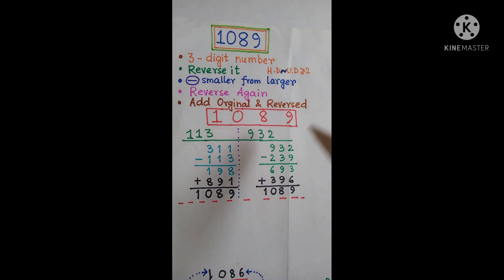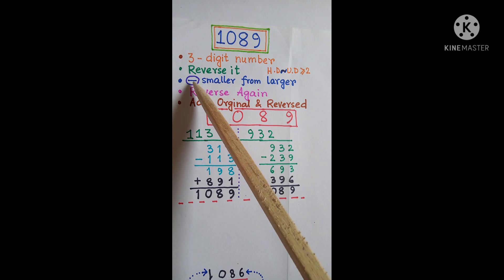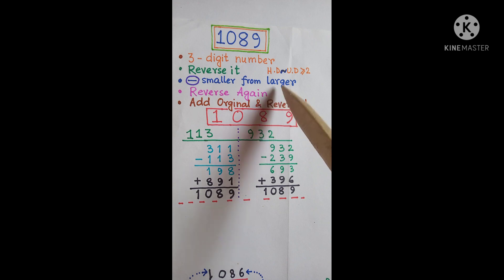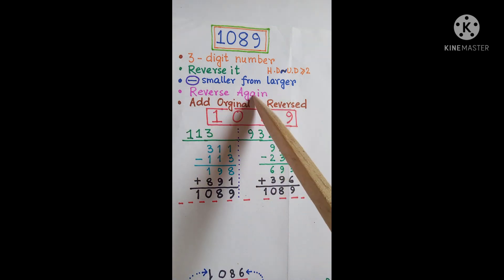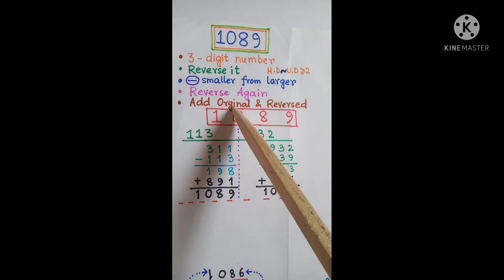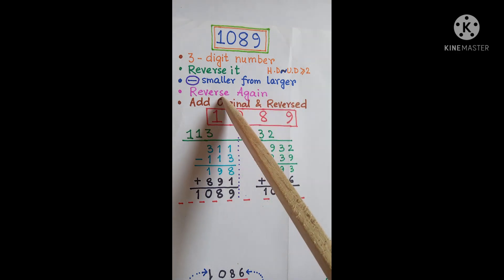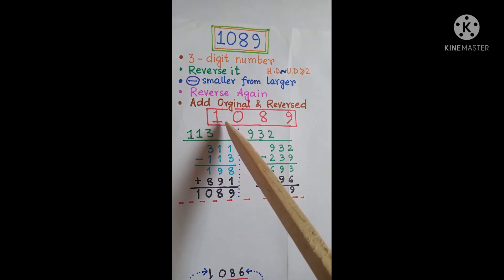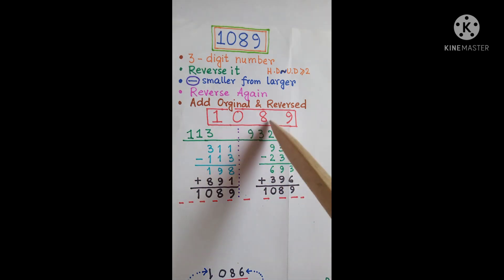Like 113 will become 311. Then we will subtract the smaller number from the larger number. Again we will reverse, then add the original number and the reverse number obtained here after subtraction. What we will get? Obviously 1089.